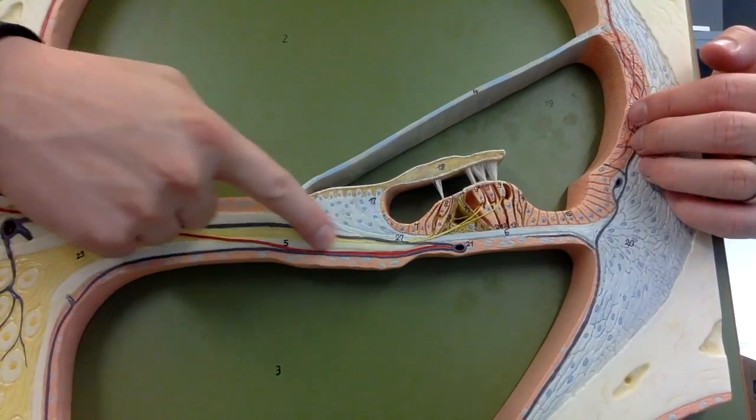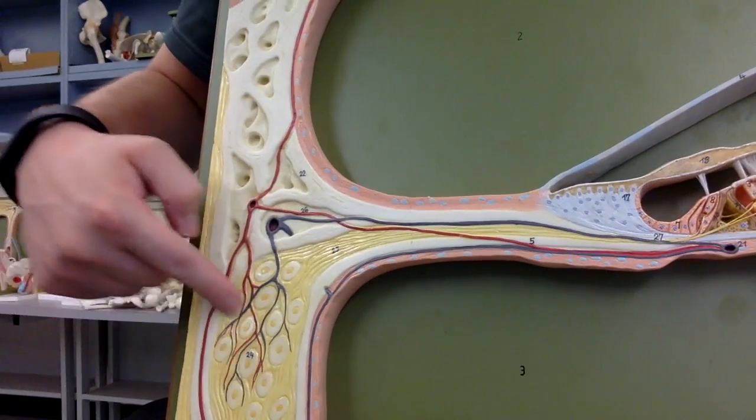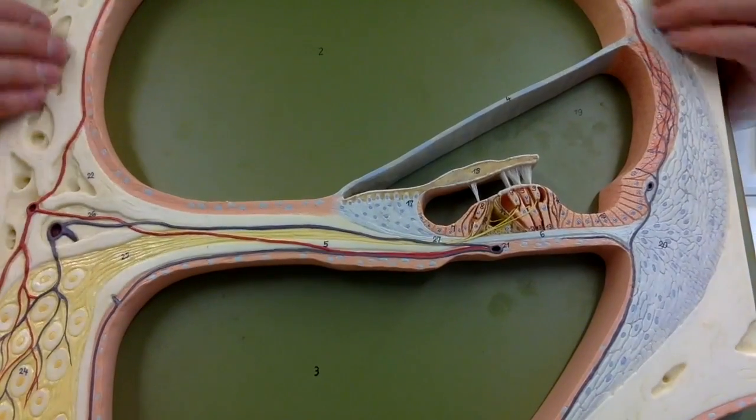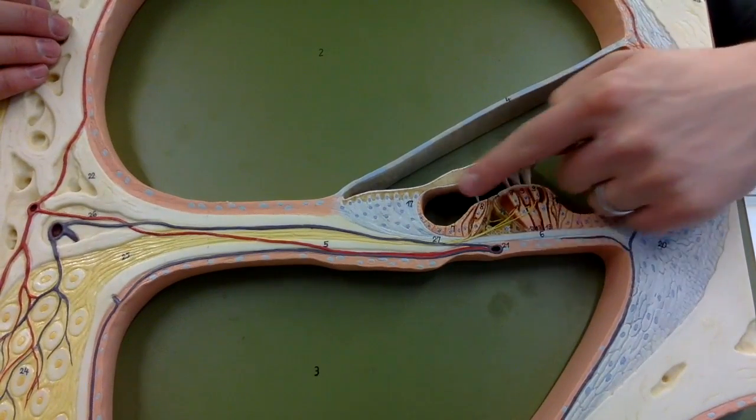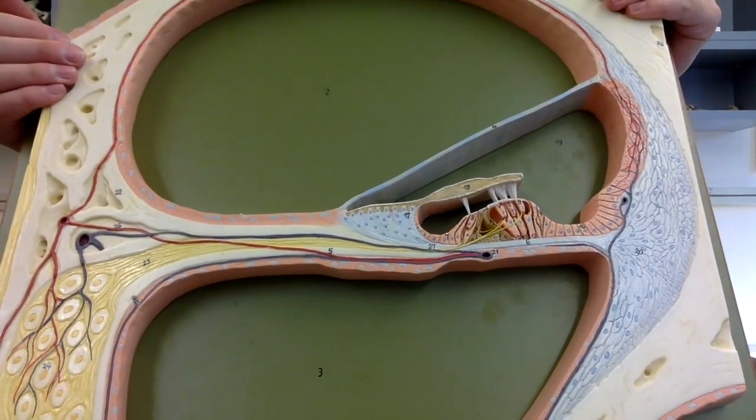And that is sending or transmitting information to the spiral ganglion, which is over here. Spiral ganglion, which is allowing you to know what you're hearing. Then we have some hair cells right here, and a couple other things.